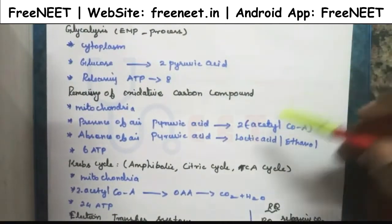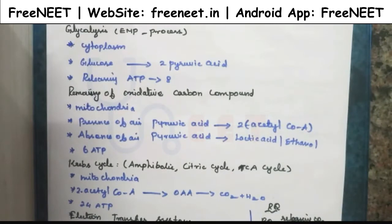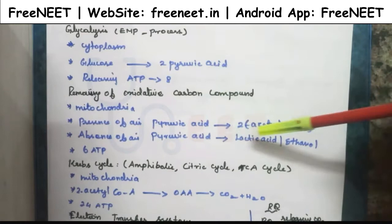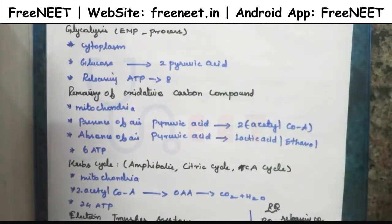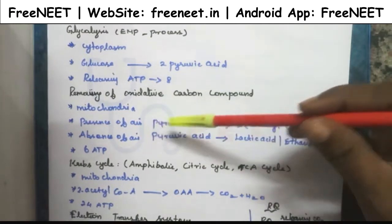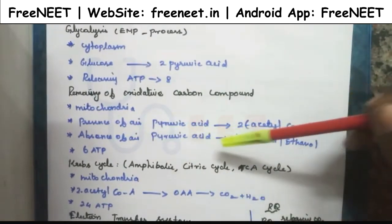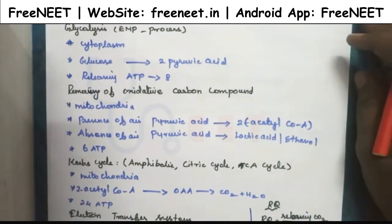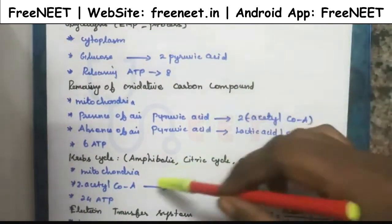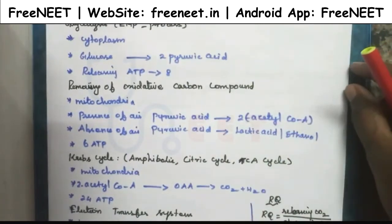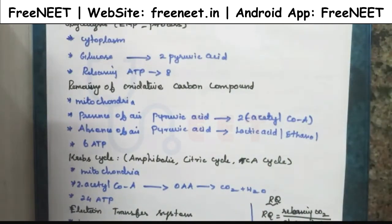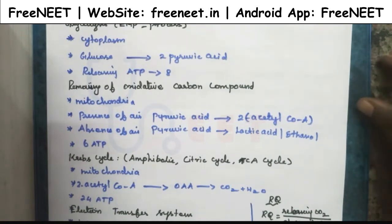Following glycolysis, we see the removal of oxidative carbon compounds. This process takes place in the mitochondria. In this case, in the presence of air, pyruvic acid is converted into two acetyl coenzyme A molecules. In the absence of air, pyruvic acid is converted into lactic acid or ethanol. During the removal of oxidative carbon compounds, 6 ATP is released.